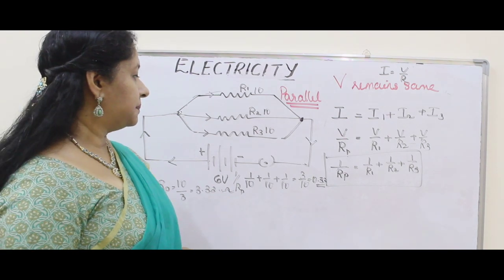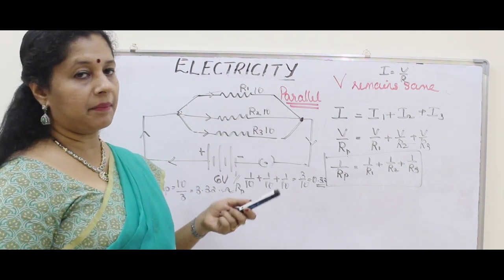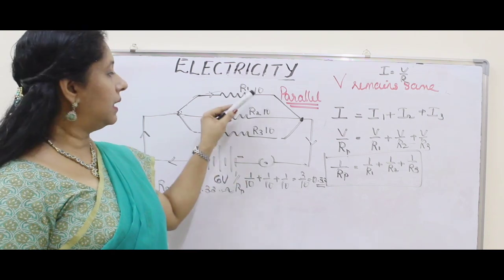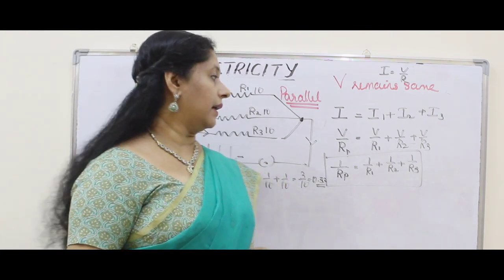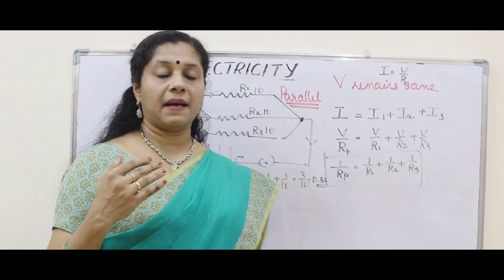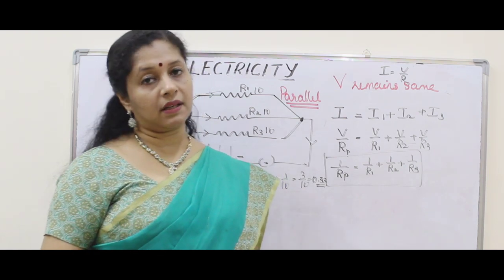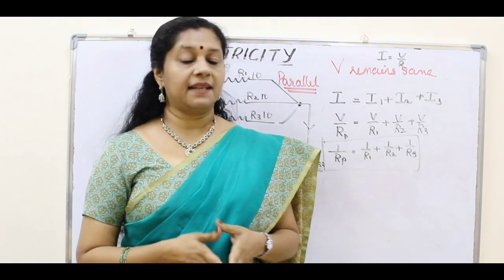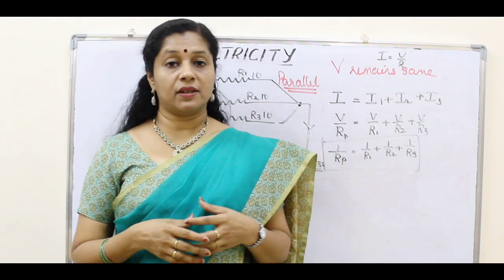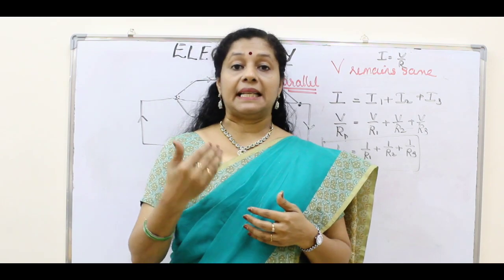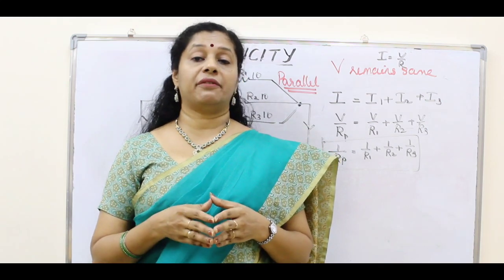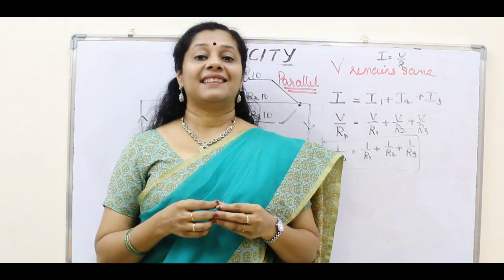To summarize: if the resistances are the same and connected in parallel, the equivalent resistance is just that value divided by the number of resistors. For series, simply add the resistors; for parallel, add the reciprocals of the individual resistors. If you understood all the concepts discussed today, please give your valuable suggestions in the comment box. Share with your friends, subscribe to the channel, and please give a like. Thank you for watching.